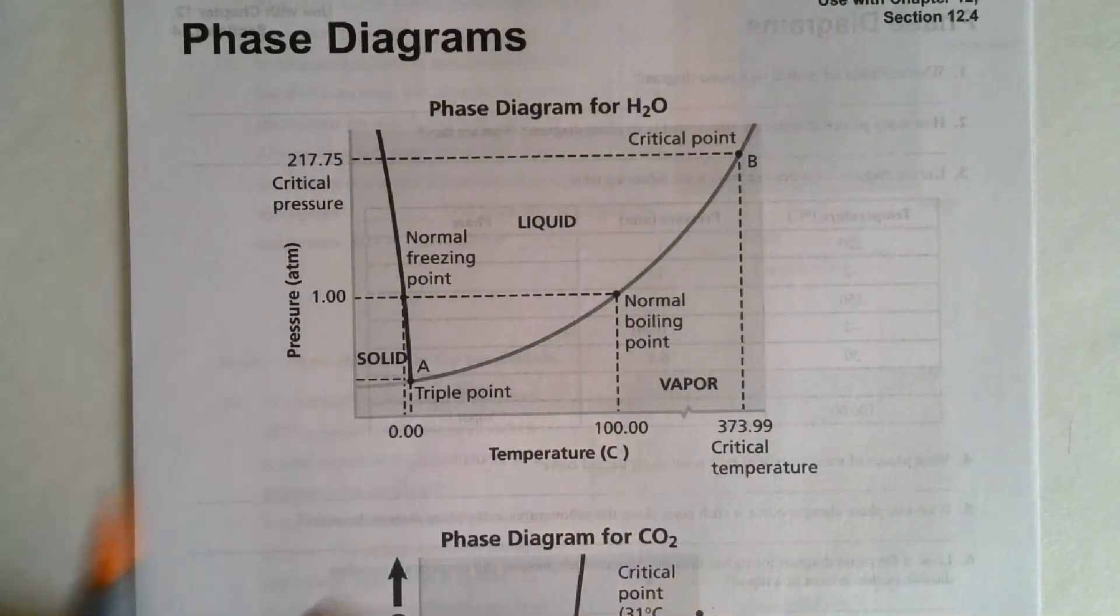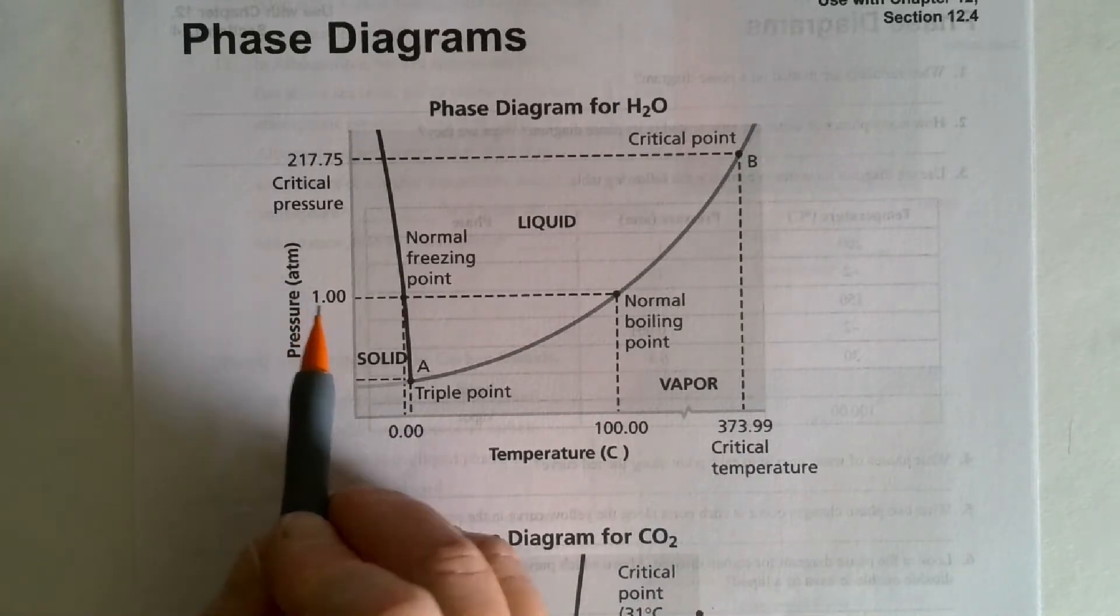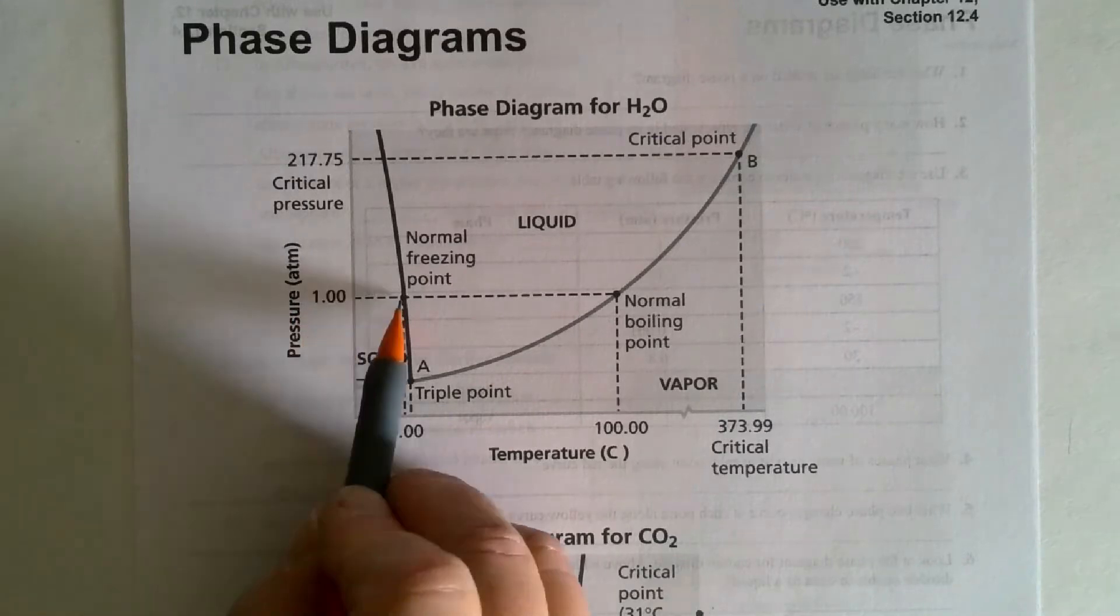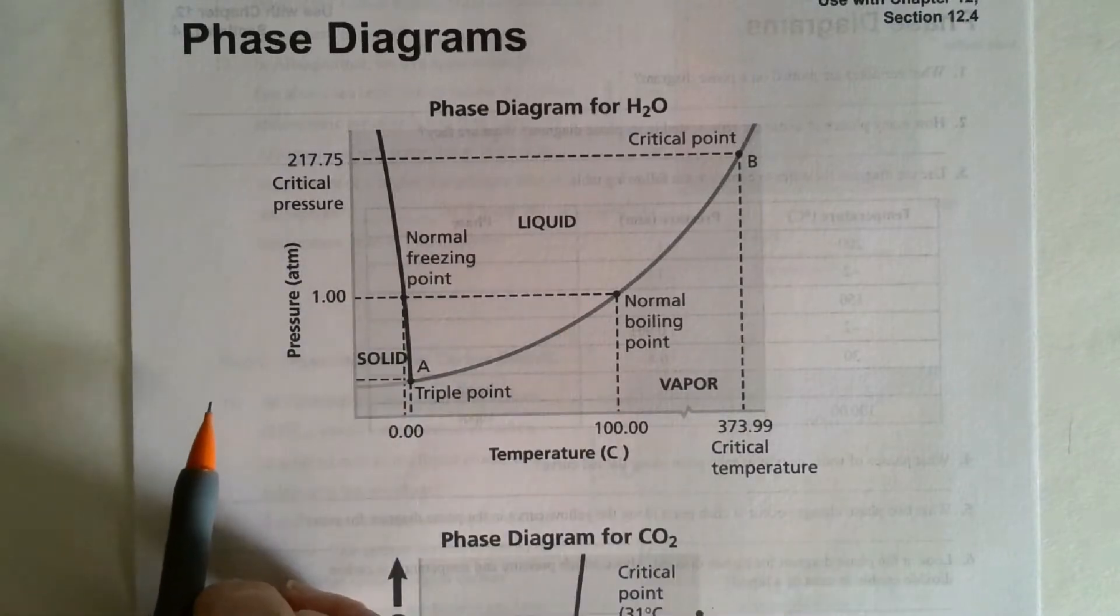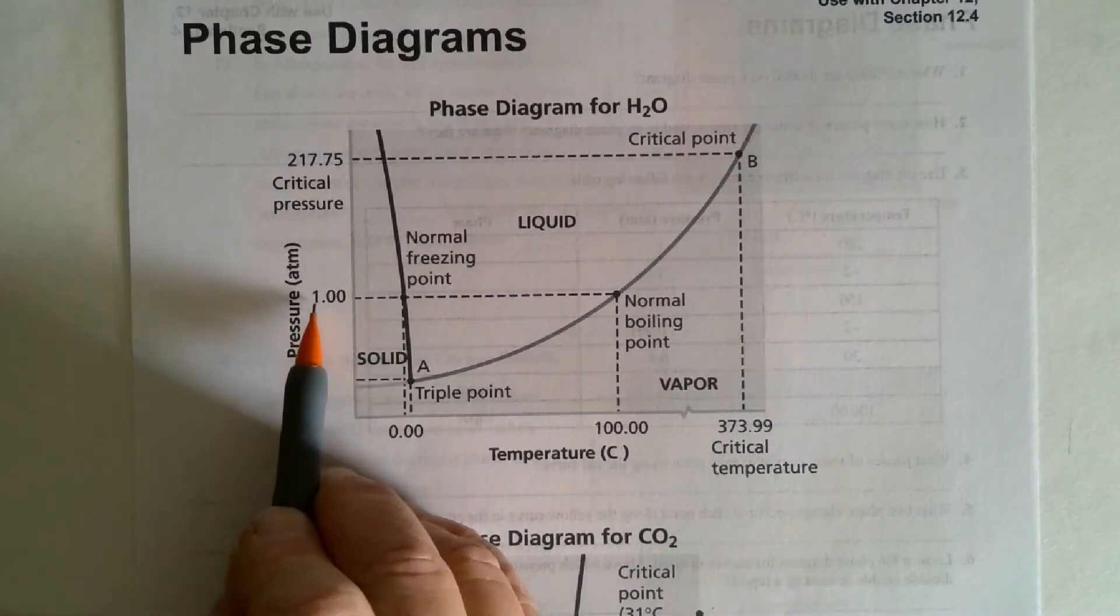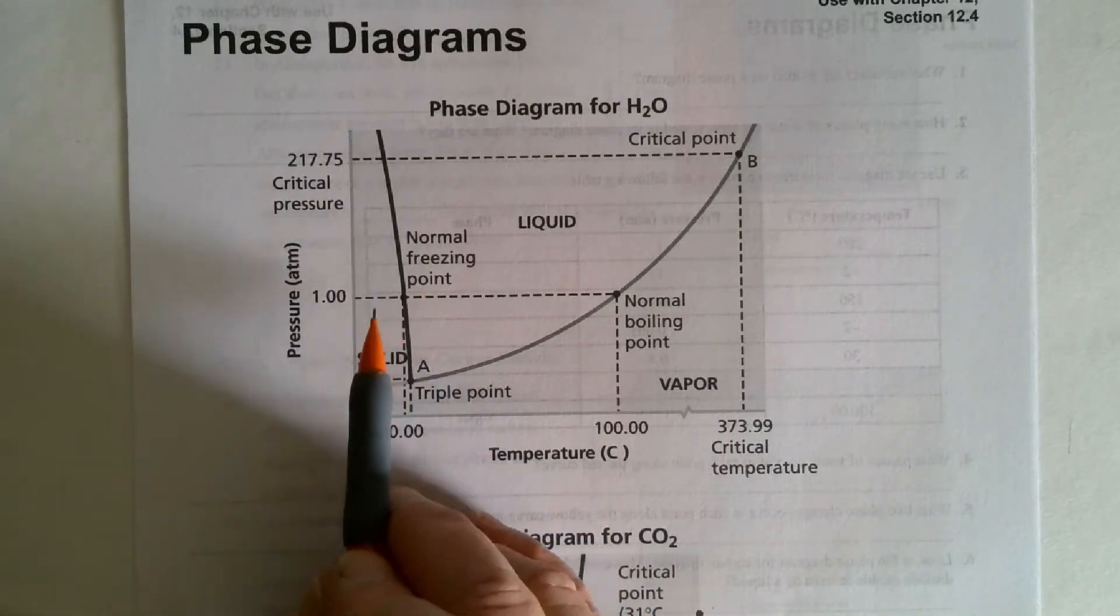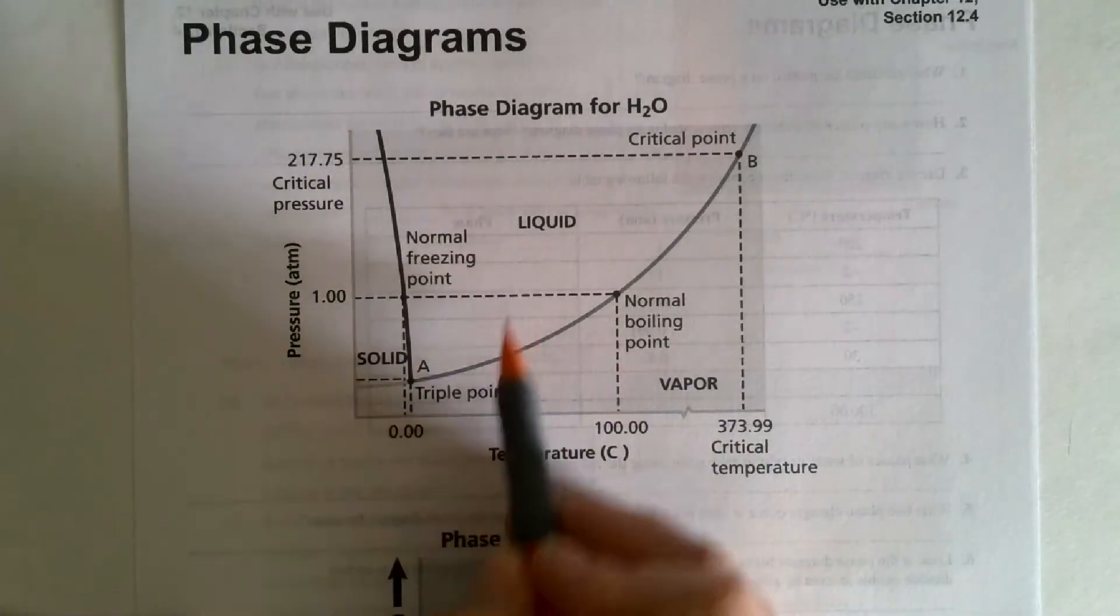If it's a normal pressure, it's one atmosphere. I like to use atmospheres because one is pretty easy to multiply. So at one, that's normal. One is a normal pressure. So let's look at this. If we have it at normal pressure, the freezing point, the normal freezing point, is indicated right here as it goes from a solid to a liquid. Notice we have a solid, liquid, and vapor.